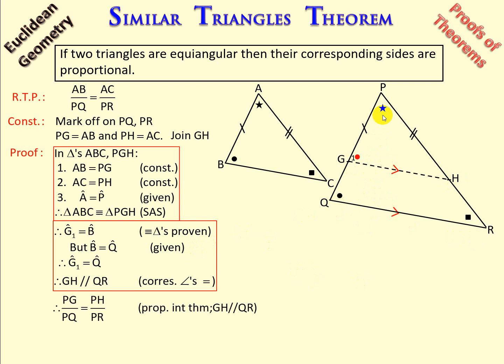Now, it means that PG over PQ is equal to PH over PR. You can see that PG over PQ is equal to PH over PR, and I'm using the proportional intercept theorem, and GH is parallel to QR.